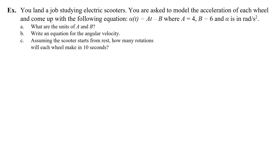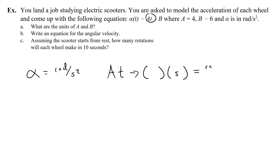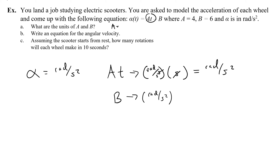This comes up often where you don't know the units and have to make sure they agree with the output of the function. Alpha is in radians per second squared. So the term a times t must produce radians per second squared when multiplied by seconds — meaning a must have units of radians per second cubed, so that one second cancels to leave seconds squared in the denominator. The b term is not multiplied by t at all, so b is just radians per second squared.